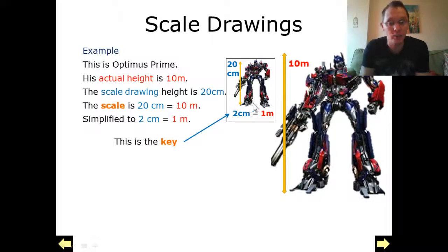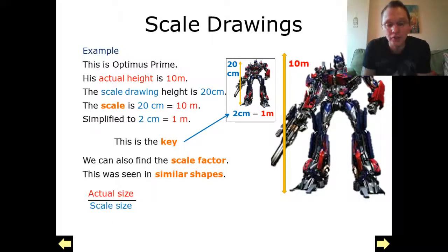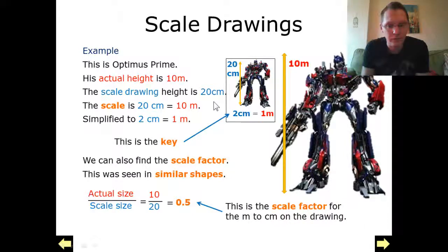We could use this to actually draw any other part of this, because if it was given any other dimension of the real life, we could use the key to create the corresponding drawing. Using this as our scale factor, we're going to take the actual size, and we're going to divide it by the scale size. 10 divided by 20, that gives me 0.5.